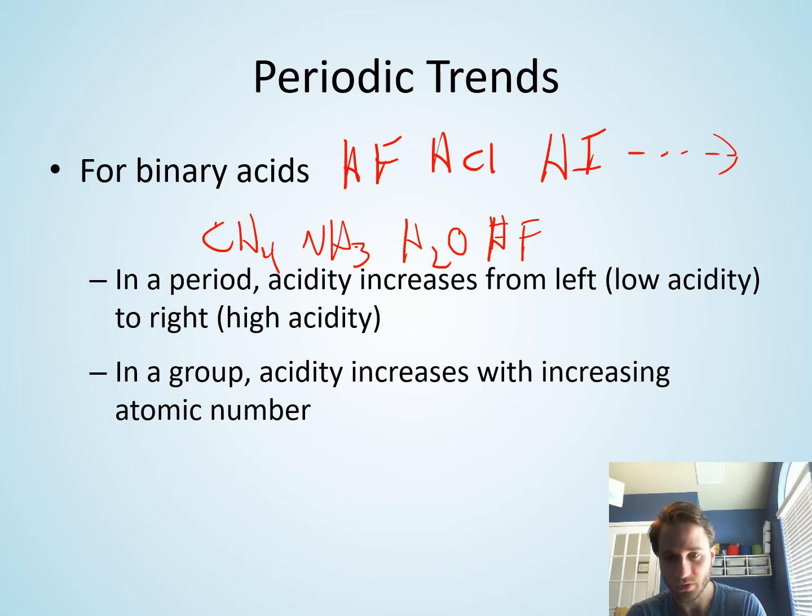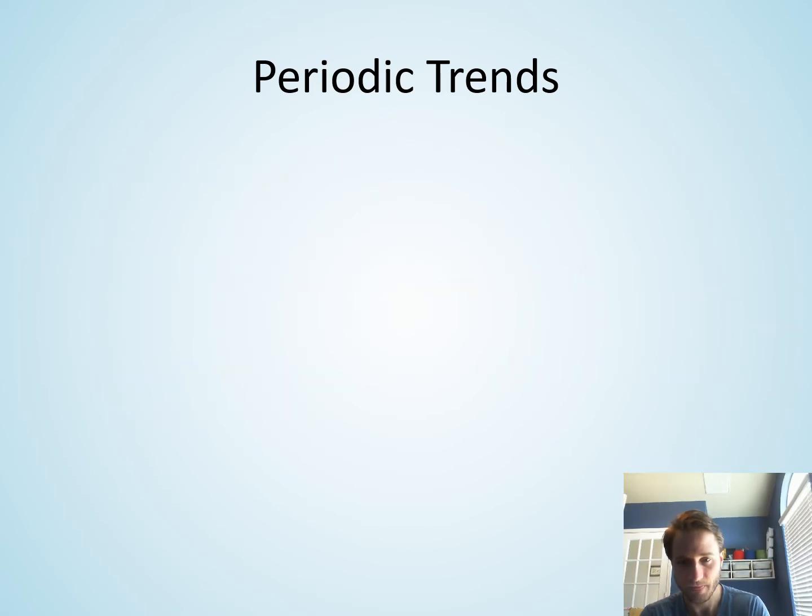And then within a group - again talking about HF, HCl, HBr, HI - the acidity increases with increasing atomic number or as you go down the periodic table. So you go down the periodic table, the acid becomes stronger and stronger. HI is a much stronger acid than HF.